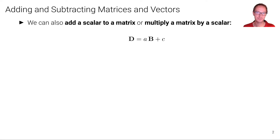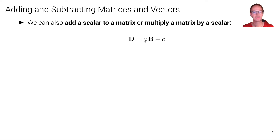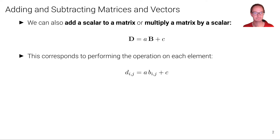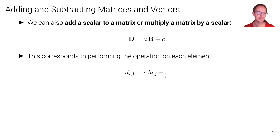We can also add a scalar to a matrix or multiply a matrix by a scalar — this is mathematically well defined. So for example if we have matrix B, we can multiply it with a scalar A and then add a scalar C to get a matrix D as an outcome which has the same shape as matrix B, because we multiply the scalar A to each element of B and add the scalar C to each element of B. In other words, for element IJ of matrix D we have scalar A times B_IJ plus scalar C. We do everything element-wise.